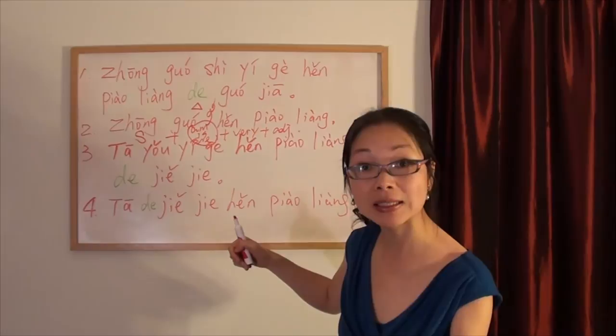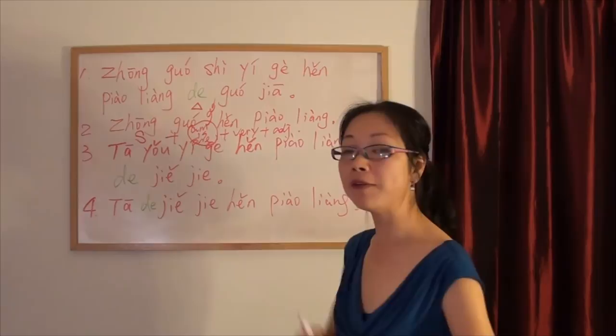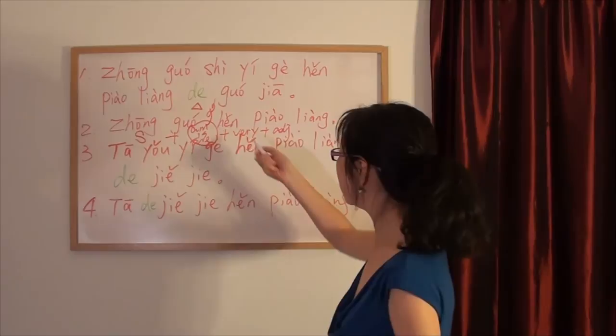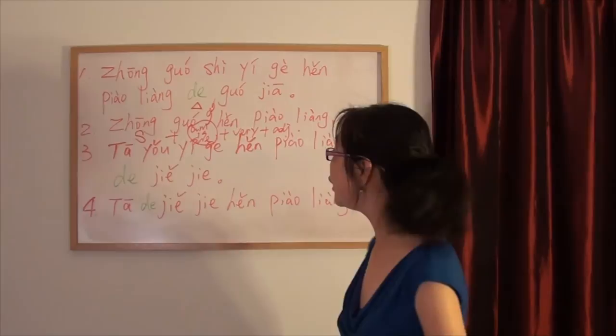And some people ask me, how about if the sentence is just like this: China is beautiful. China is beautiful. There's no very. How can we translate? Very easy. Remember.